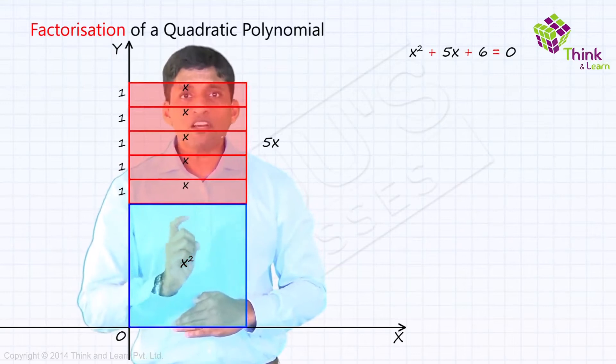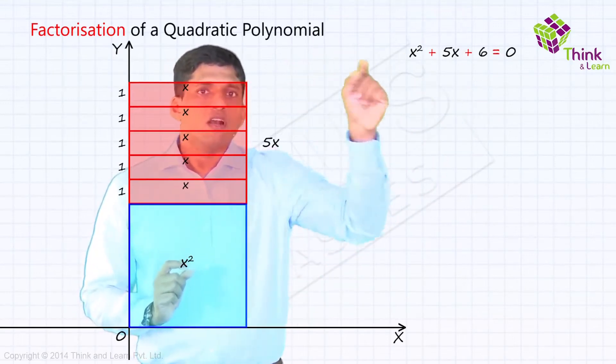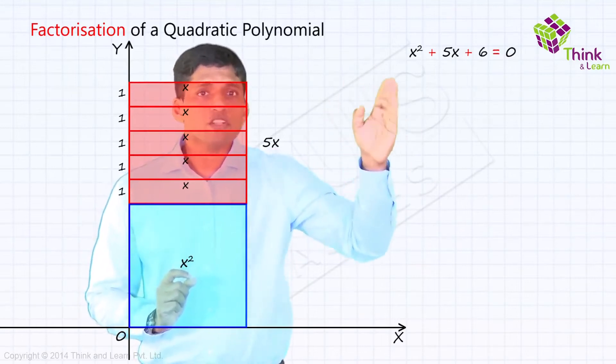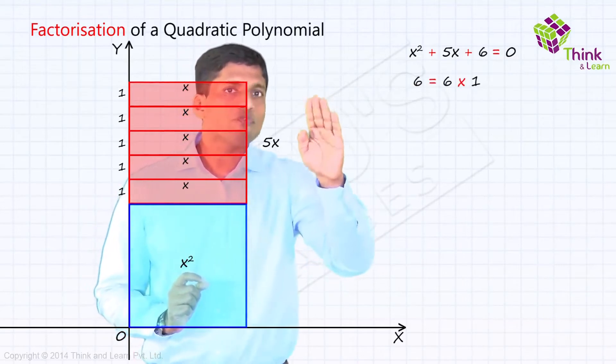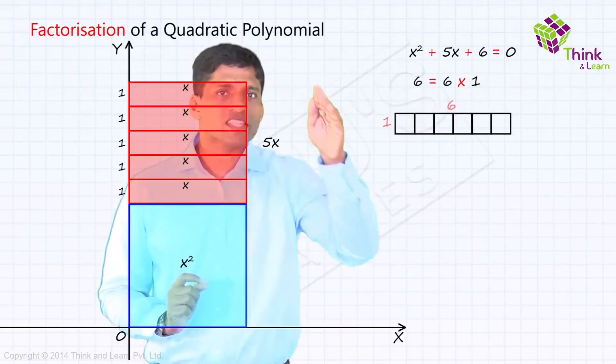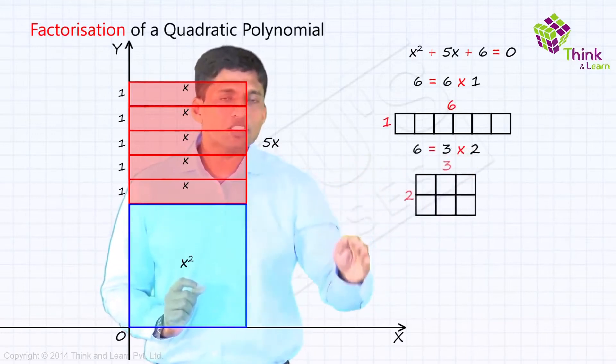But as per our method of factorization, what we are supposed to do is that 6 into 1, you are supposed to write as product of two numbers. You can either write it as 6 into 1, so in a rectangle it will look like this where length is 6 and breadth is 1. Or you can take it as 3 into 2, where the length is 3 and breadth is 2.